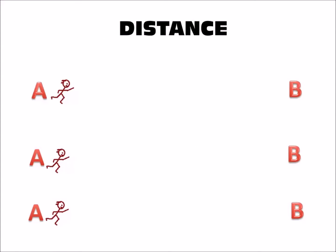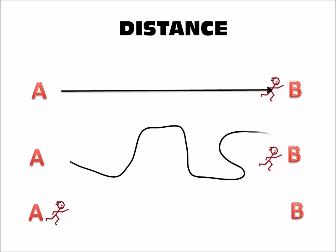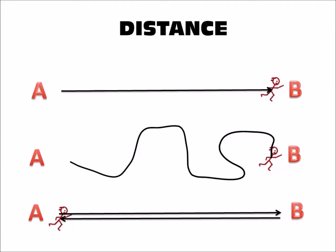Here are three different runners. They're going to run from A over to B. Our first runner travels directly from A to B in a straight line. The second runner travels from A to B in a curved path. Our third runner travels from A to B, but then turns around and comes right back to A again.